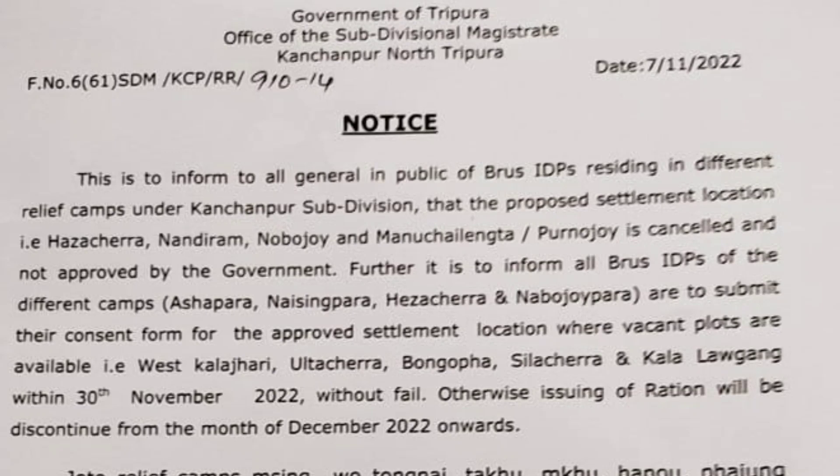The approved settlement locations are: West Kalajari, Ulta Chera, Banguopha, Sila Chera, and Kalalogang. Consent forms must be submitted within 30 November 2022 without fail. Otherwise, issuing of ration will be discontinued from the month of December 2022 onward.